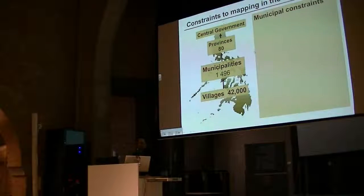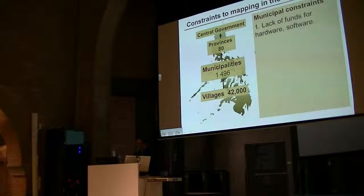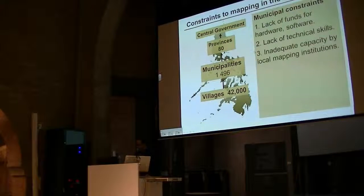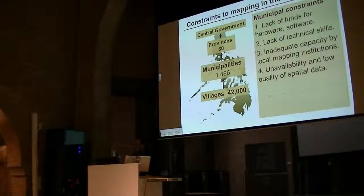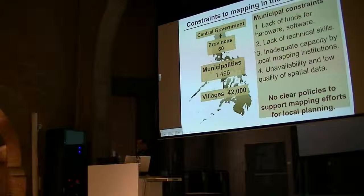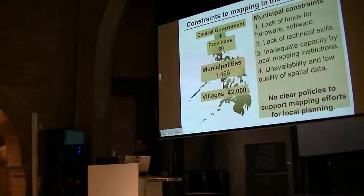They have particular constraints mostly found in developing countries: lack of funds for hardware and software, lack of technical skills. We don't have a lot of institutions that have the capability to map, and if we do, with only around three institutions, you have to support 1,496 municipalities. We don't have a spatial data infrastructure to share spatial data, and we don't have policies to support mapping efforts. But by law, they have to map.